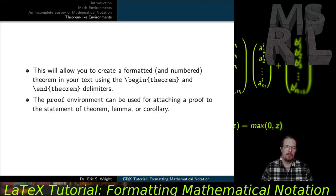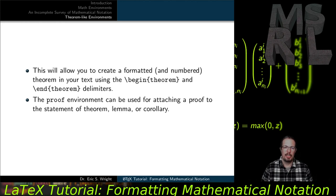After theorems, lemmas, corollaries, or any environment that might require proofs, you can add a proof environment. This is opened and closed using begin-proof and end-proof, and it provides a way of attaching a proof to the statement of a theorem, lemma, or corollary.